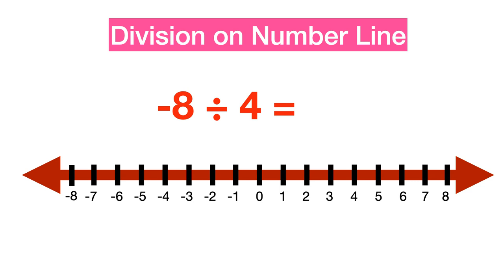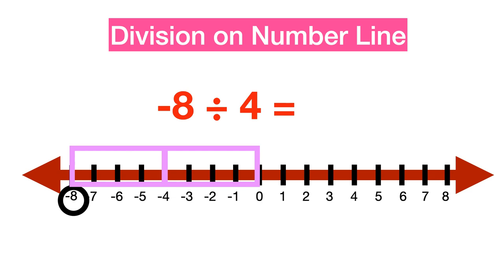When minus 8 is being divided by 4, first mark minus 8 on the number line and plot the multiples of 4 starting from 0. Second, starting from minus 8, keep subtracting 4 until reaching 0, moving 4 steps to the right each time. The number of steps of 4 taken to reach 0 gives the answer. Since negative 8 is divided by positive 4, the answer carries a negative sign — the correct answer is minus 2.